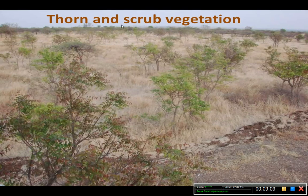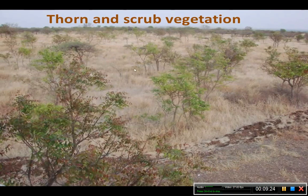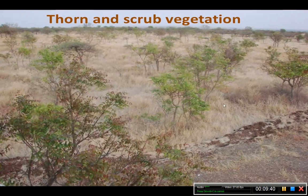Here is a picture of thorn and scrub vegetation. You can see trees are spaced with large distances between them — very scattered, not dense — with grasses in between. The vegetation does not look green, meaning it has adapted to conserve moisture or survives with very little water availability.